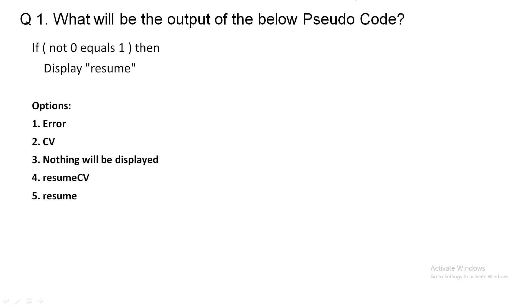What will be the output of the following pseudocode? If NOT(0 == 1) then display 'resume'. NOT(0 == 1): we know every non-zero value is considered as 1, so this becomes 1 == 1, which is true. The control comes into the if block and it simply prints 'resume'. So the answer is 'resume'.